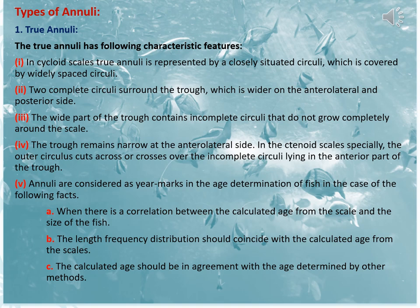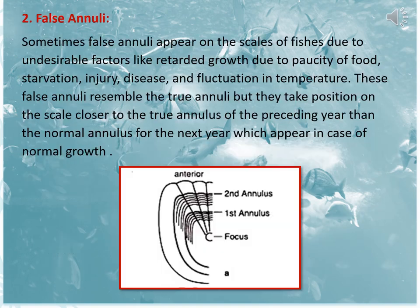In ctenoid scales especially, the outer circulus cuts across or crosses over the incomplete circuli lying in the anterior part of the trough. In this slide you can see focus and circuli that are making the first annulus and second annulus, which tell about the age of the fish. This scale is talking about a two-year-old fish.